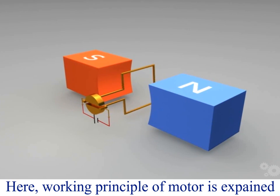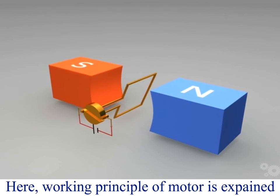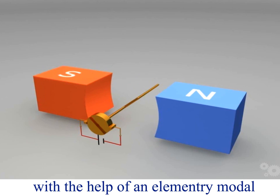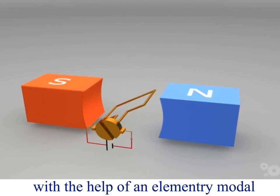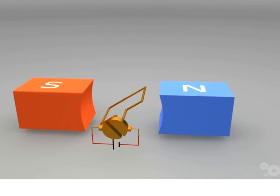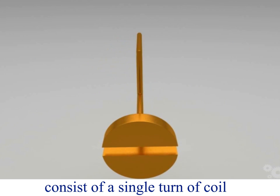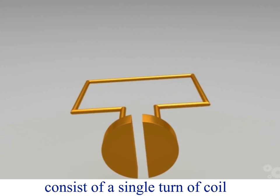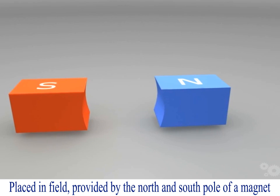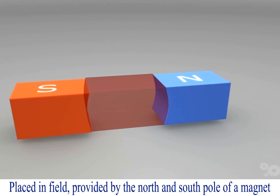Here, the working principle of a motor is explained with the help of an elementary model consisting of a single turn of coil placed in the field provided by the north and south poles of a magnet.